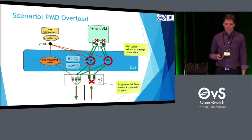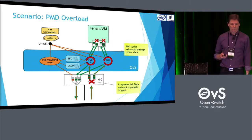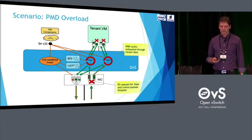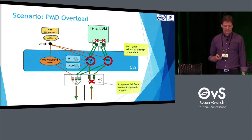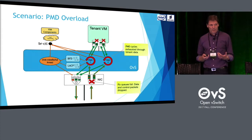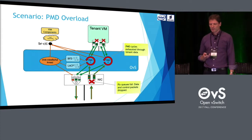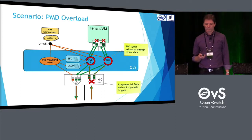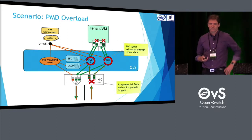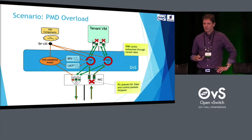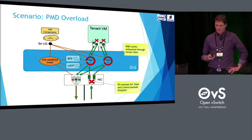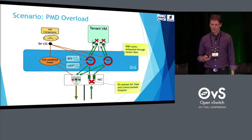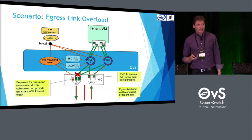The most critical overload scenario is PMD overload, which can easily happen if a tenant VM or the physical network receives a large amount of small packets. In this case, PMDs don't keep up, ingress queues run full, and packets are dropped. Since we have a mixture of control plane and data plane traffic, both are affected equally. The egress direction is not affected because the egress control plane is handled by the vswitch daemon thread, which is not overloaded.